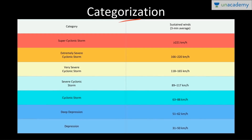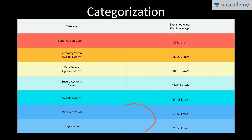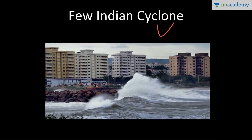The IMD classifies low pressure systems in the Bay of Bengal and the Arabian Sea into seven classes: depression, deep depression, cyclonic storm, severe cyclonic storm, very severe cyclonic storm, extremely severe cyclonic storm, and super cyclonic storm. At just 50 km/h it is a depression; above 221 km/h with sustained three-minute average winds it is a super cyclonic storm. Once winds reach at least 62 km/h it is assigned a name as a cyclonic storm.